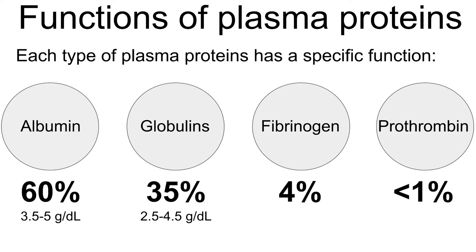The functions of plasma proteins. Plasma proteins have eight functions. For easy memorization, we will classify them into two groups, each group having four functions. The first group, which we will discuss now, is related to the four types of plasma proteins, because each type of plasma protein has a specific function.